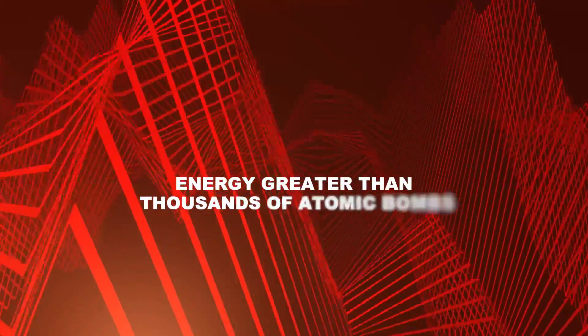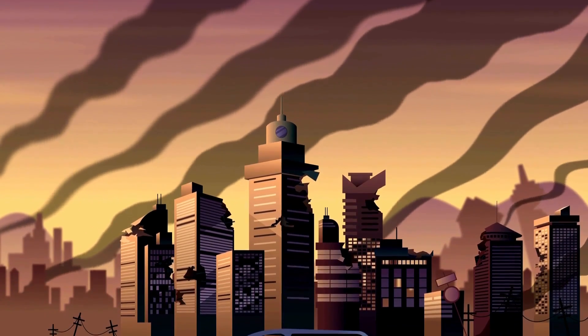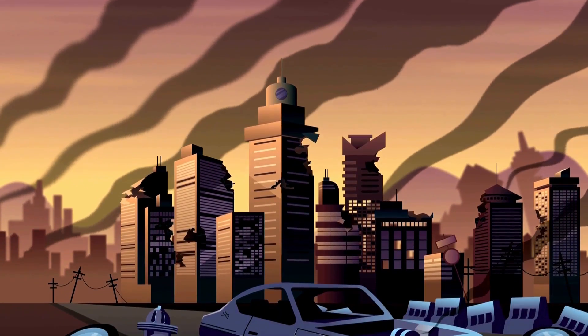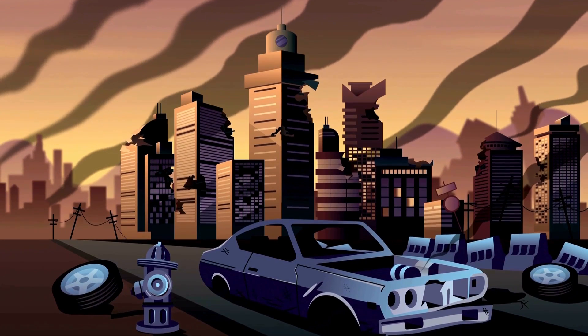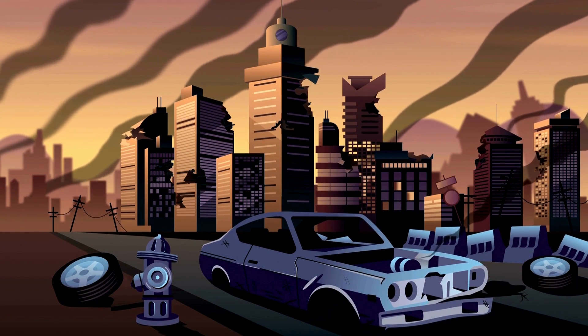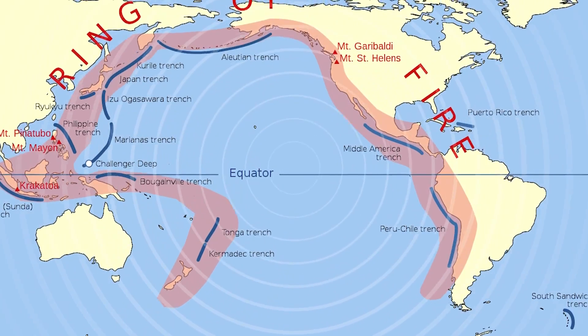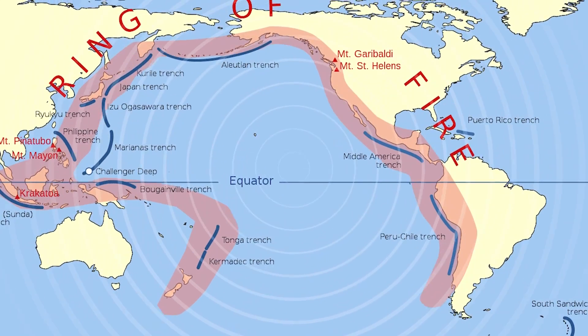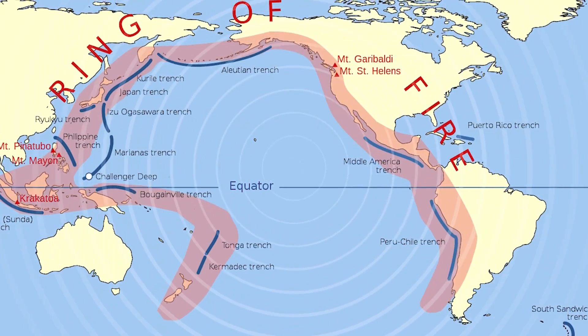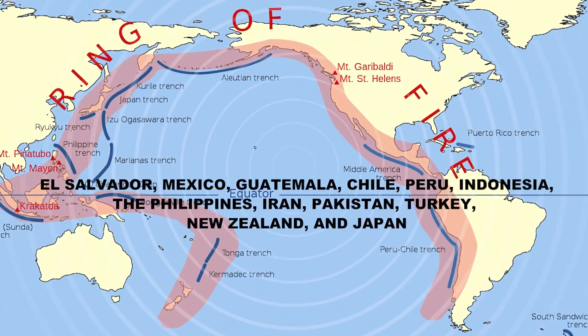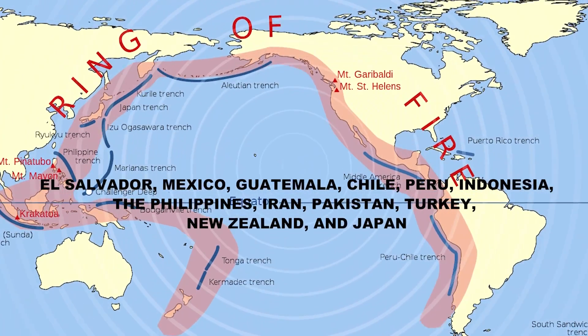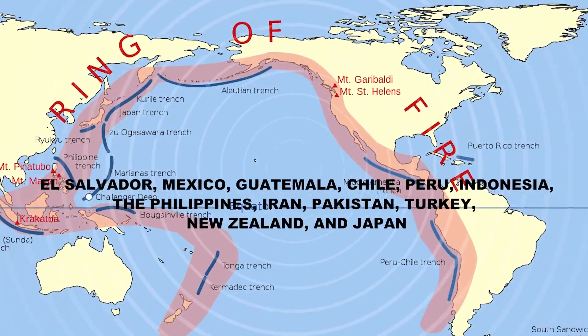Earthquakes are by far the most powerful natural events on Earth. Quakes can release in seconds energy greater than thousands of atomic bombs combined. It is estimated that about 500,000 detectable earthquakes occur on Earth every year, though we humans can only perceive about one-fifth of them. The strongest earthquakes occur most frequently along the Pacific Ring of Fire, in places like California and Alaska in the United States, El Salvador, Mexico, Guatemala, Chile, Peru, Indonesia, the Philippines, Iran, Pakistan, Turkey, New Zealand, and Japan.